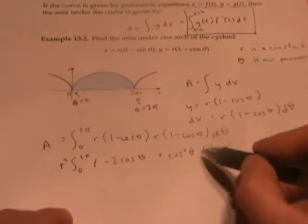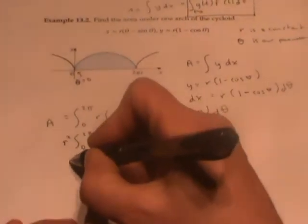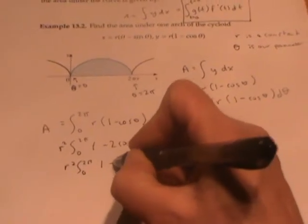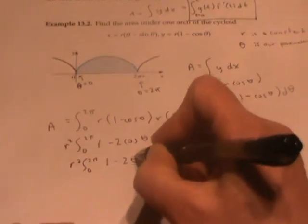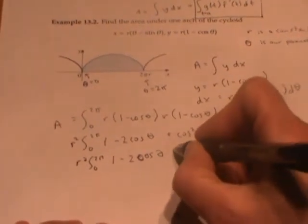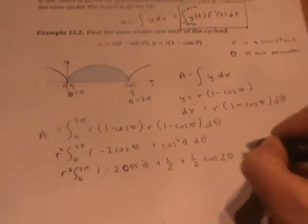These two terms are easy to integrate. And to integrate cosine squared, we can use the familiar trick of rewriting cosine squared theta as one half plus one half cosine two theta.